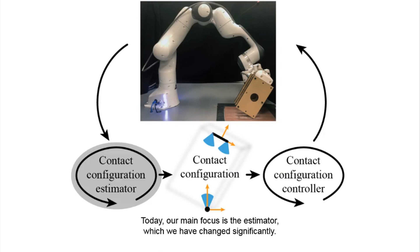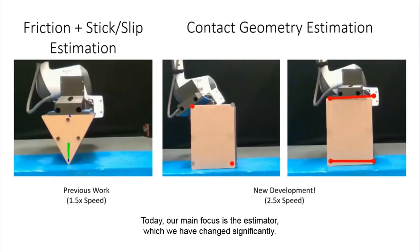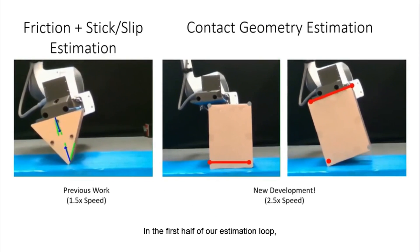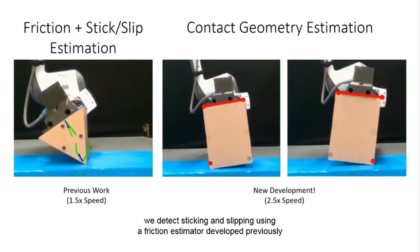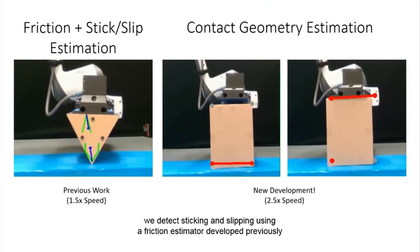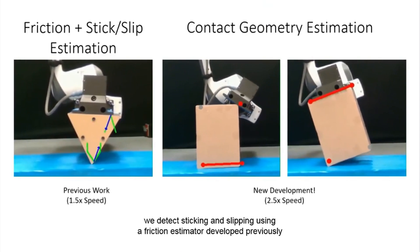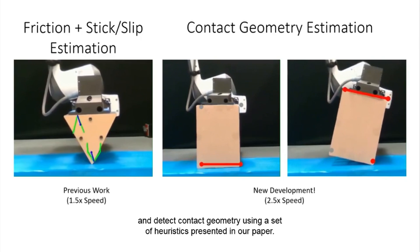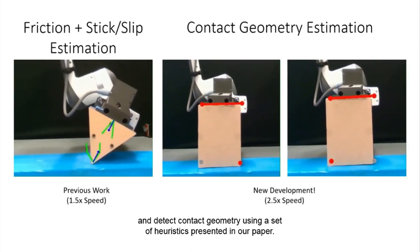Today, our main focus is the estimator, which we have changed significantly. In the first half of our estimation loop, we detect sticking and slipping using a friction estimator developed previously, and detect contact geometry using a set of heuristics presented in our paper.